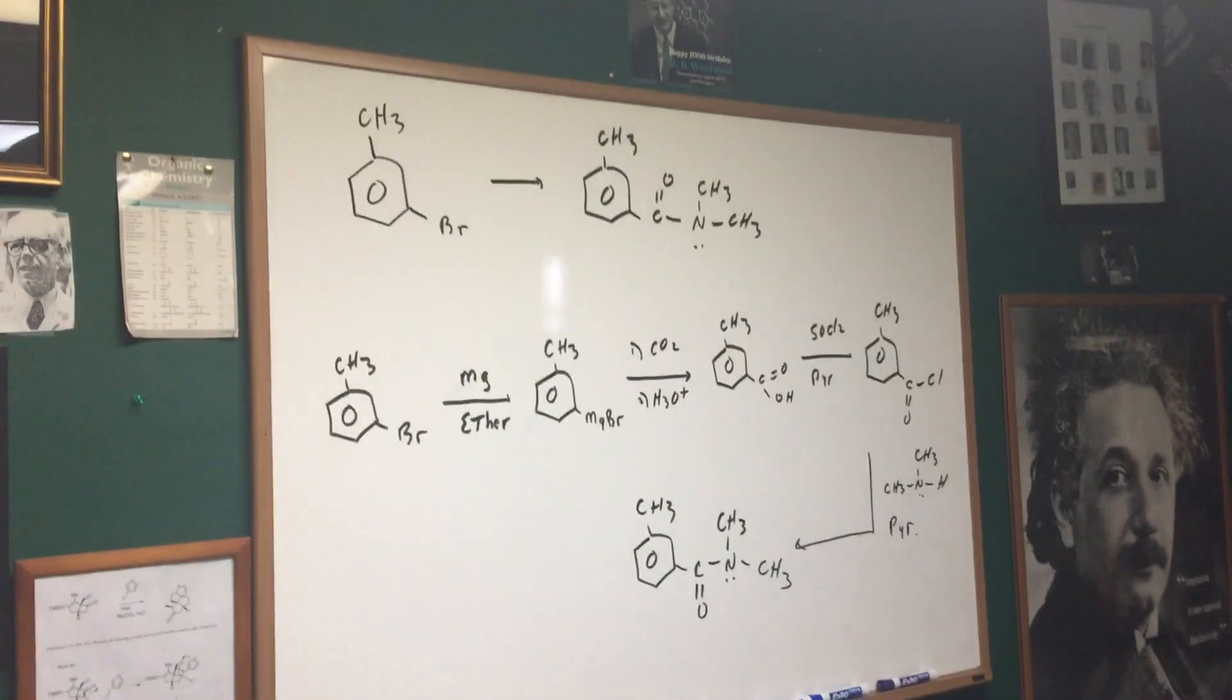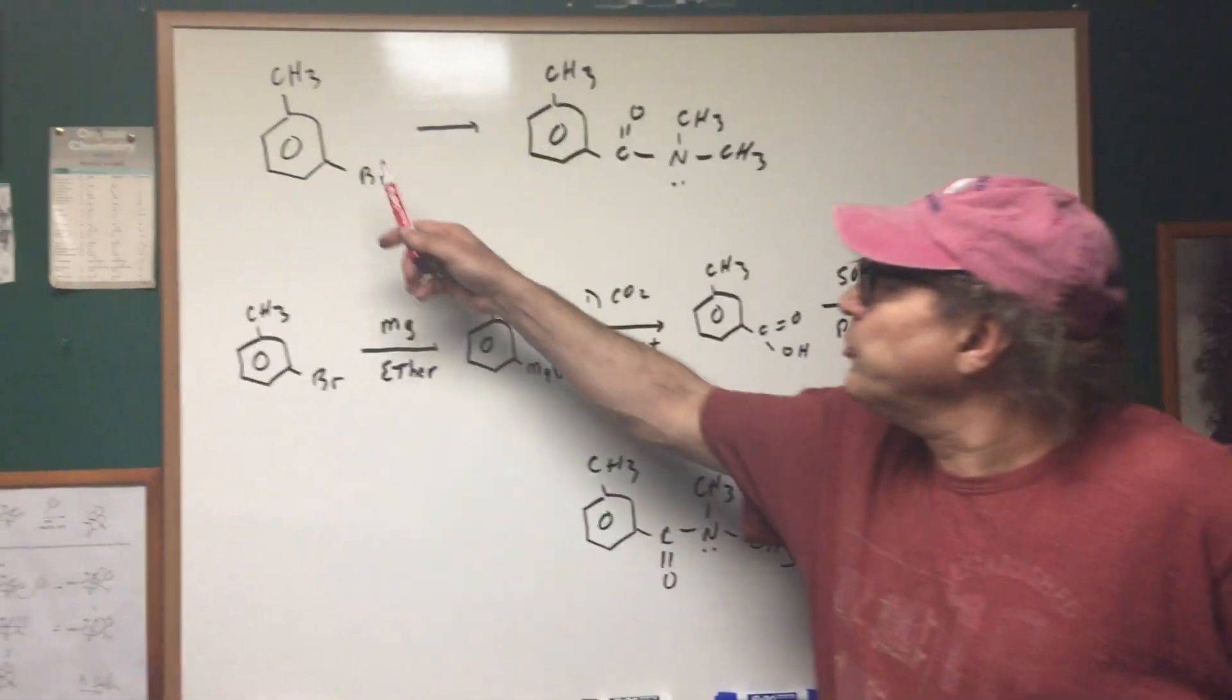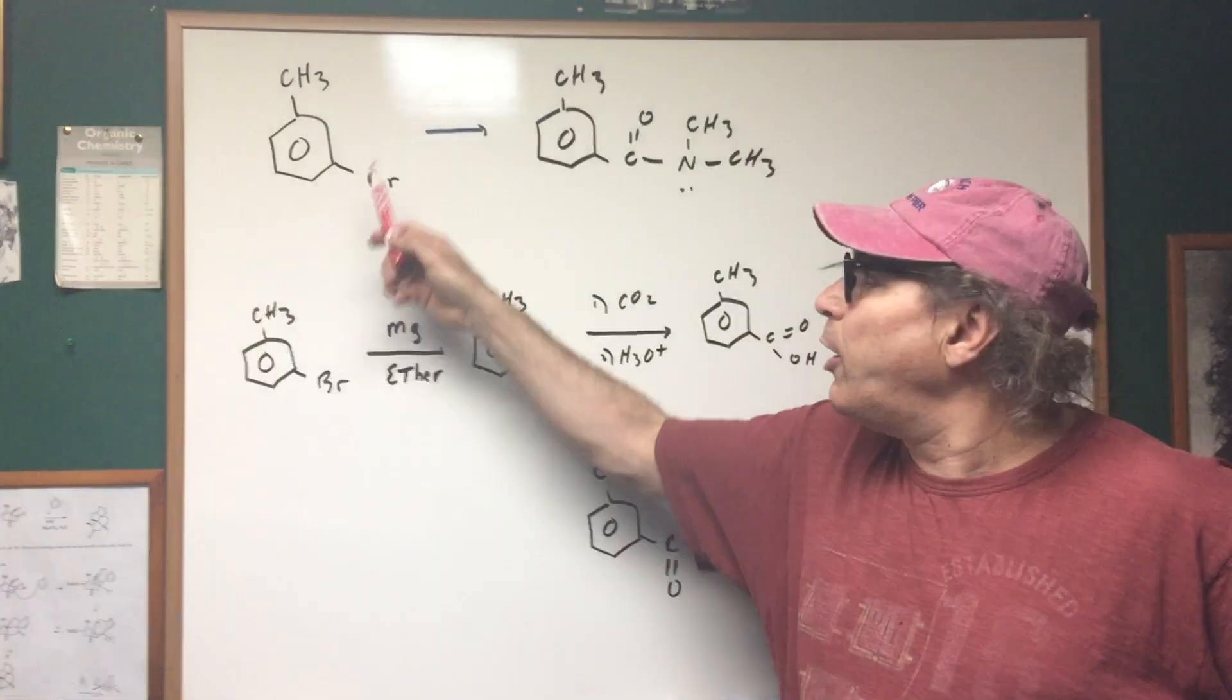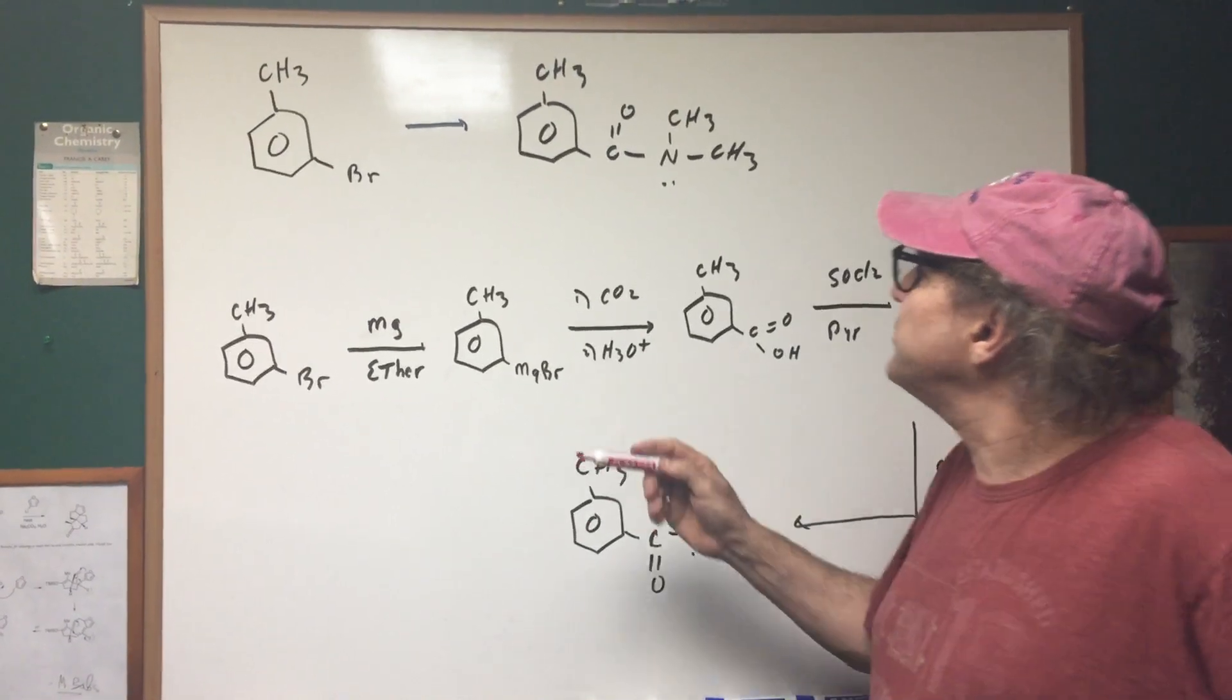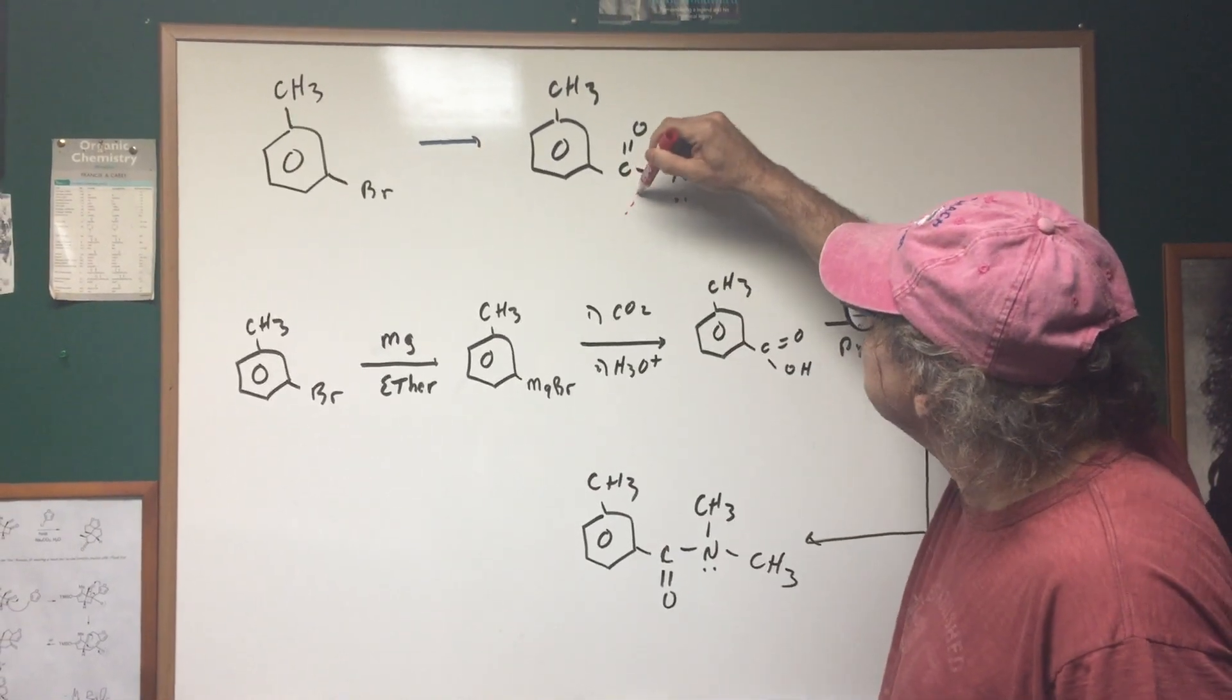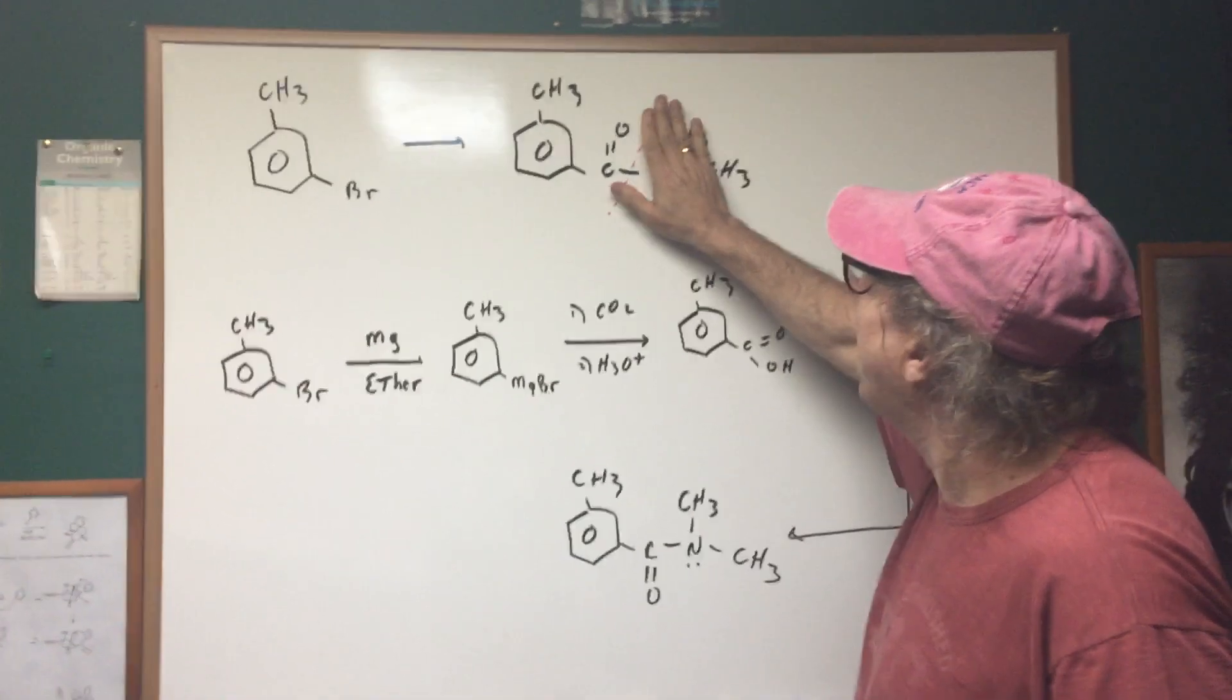Come on over here and I wrote a really good problem for you on the blackboard. What I want to do is to take 3-bromotoluene and I want to convert it into this amide. The first thing that we see here is that if I bisected this and cut this off, I have a C double bond O.